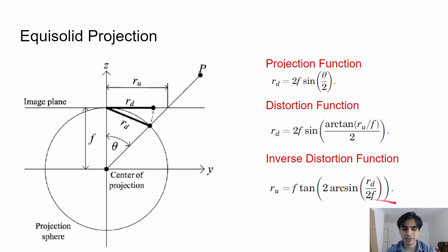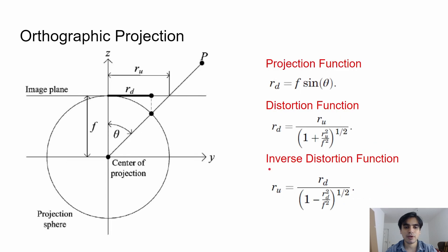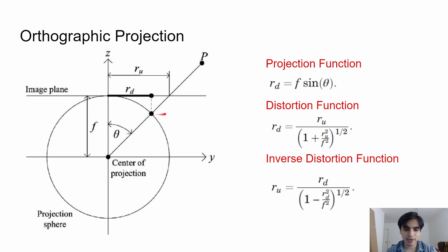Next, the orthographic projection uses a similar concept, but instead of arc length or straight-line distance, it uses the perpendicular line to project a point from the sphere onto the image plane. The point hits the sphere, and you draw a perpendicular line from that point down to the image plane — that is where the point appears. The projection function is rd = f * sin(theta), and the distortion and inverse distortion functions follow accordingly.